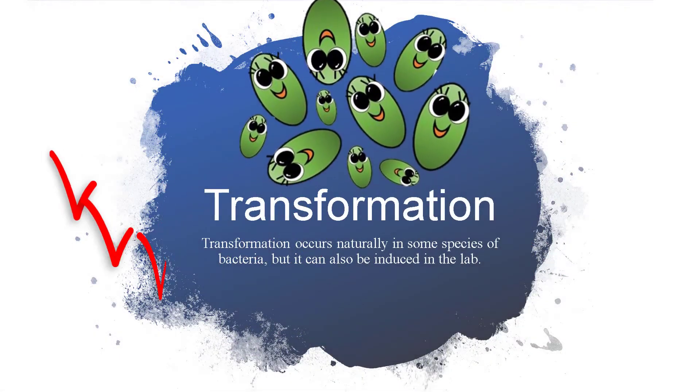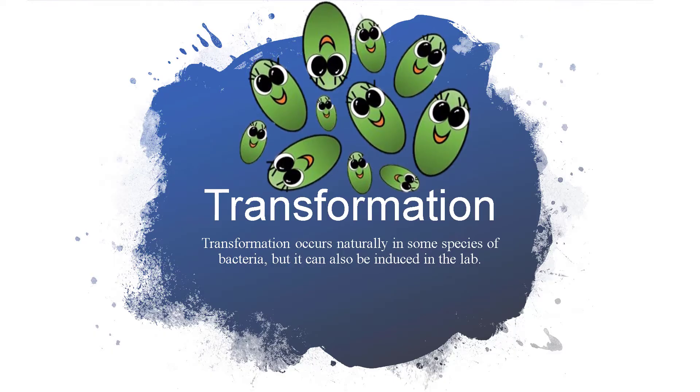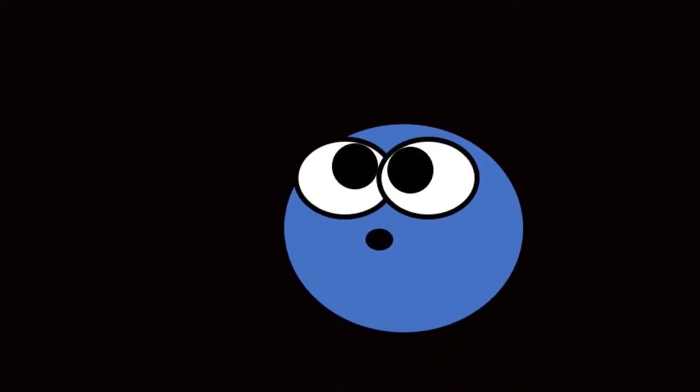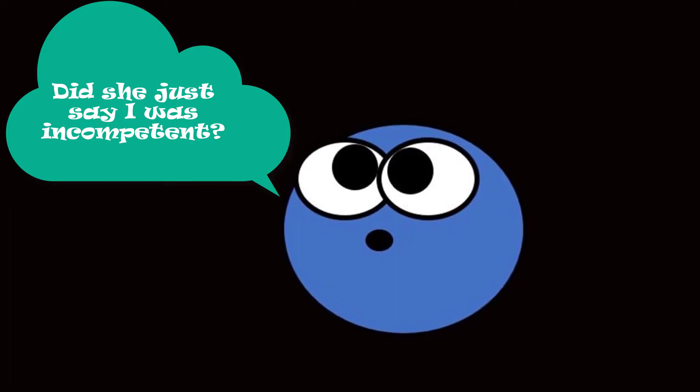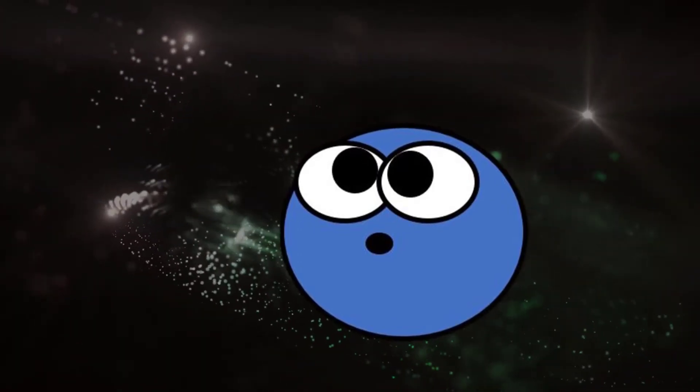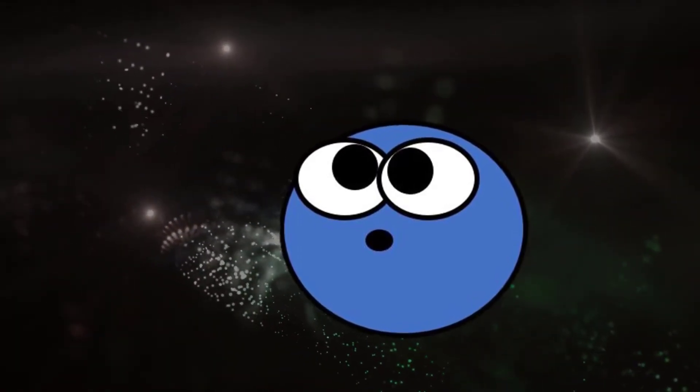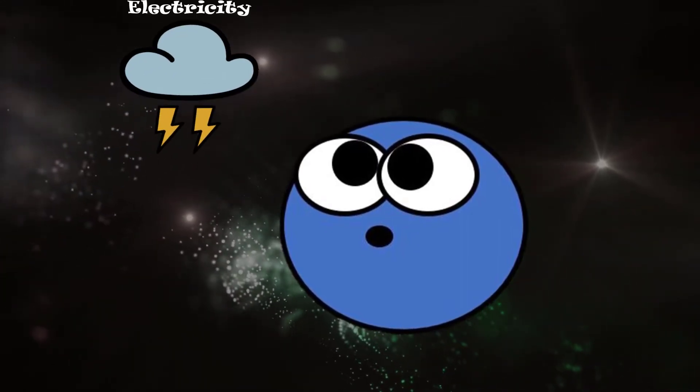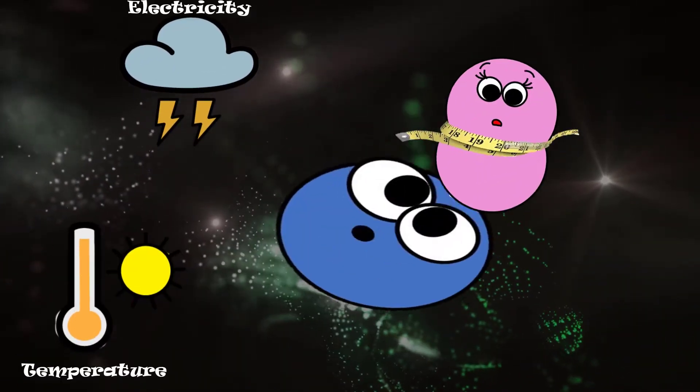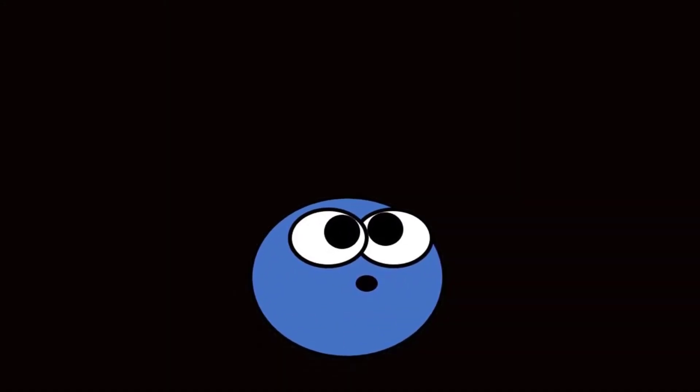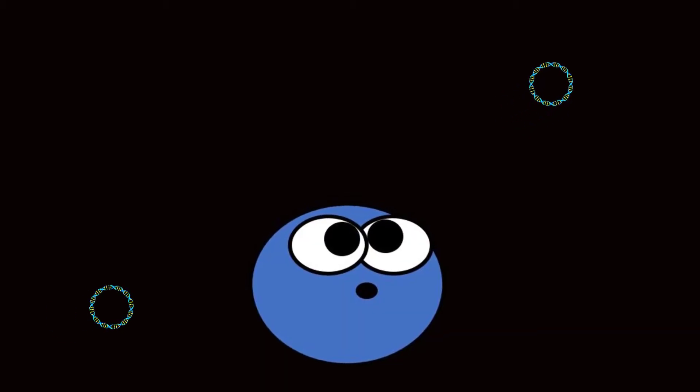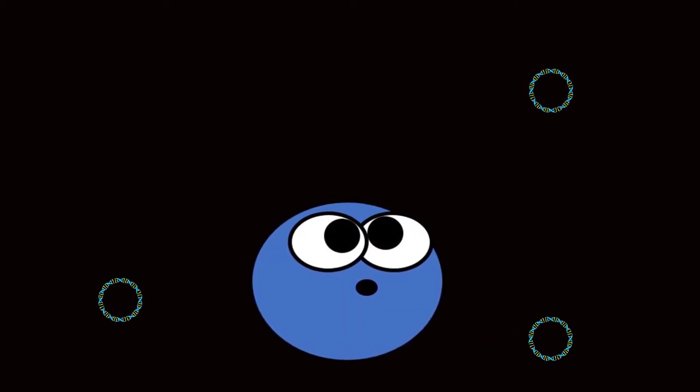Transformation occurs naturally in some species of bacteria, but it can also be induced in the lab. In order for transformation to occur, competency must be induced. For transformation to happen, bacteria must be in a state of competence, which might occur as a time-limited response to environmental conditions such as electrical charge, temperature, starvation, or cell density. Some bacteria are able to take up plasmids or other fragments of genetic material from their surroundings under certain conditions.